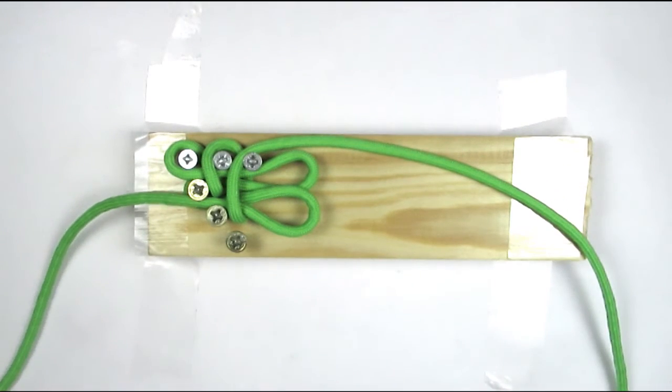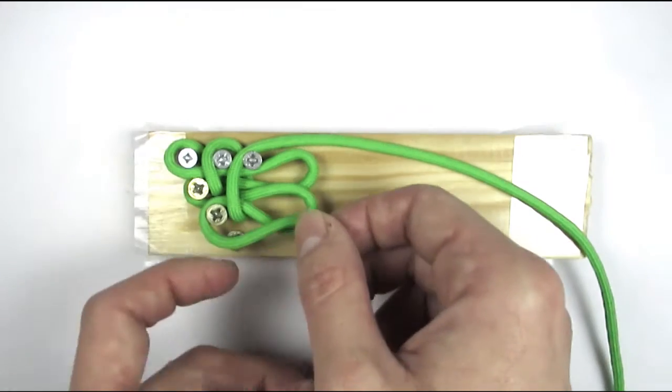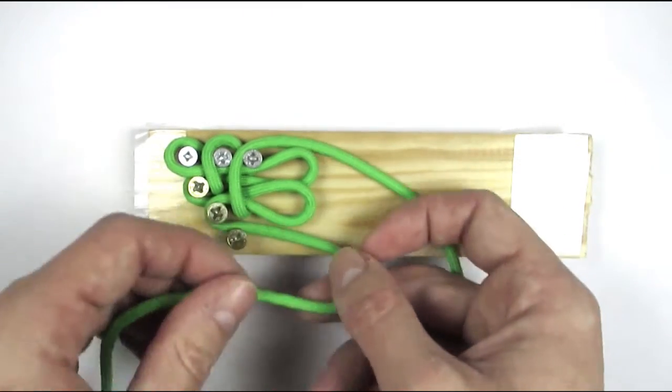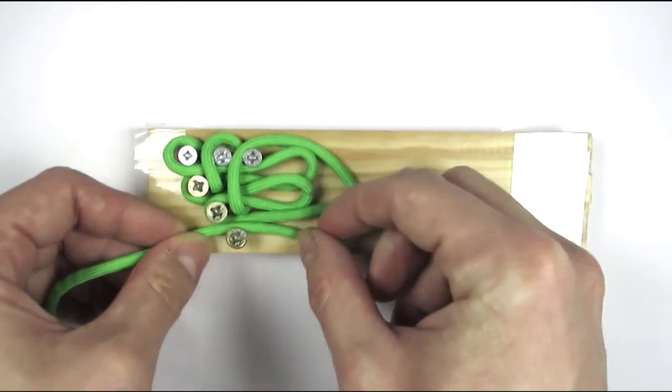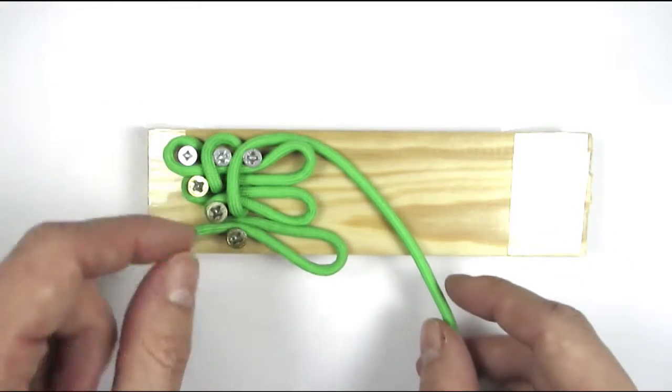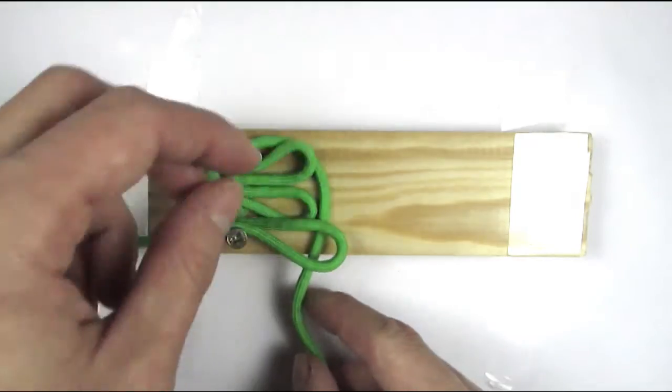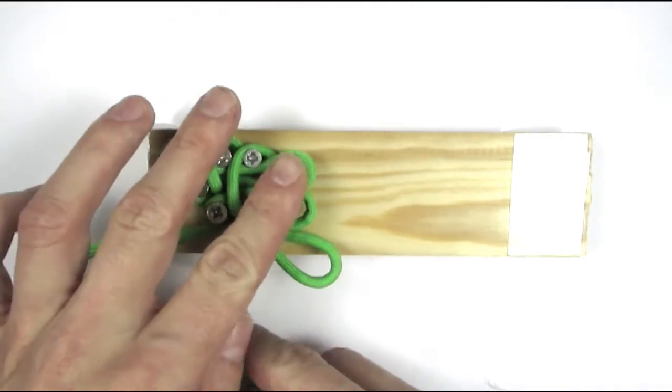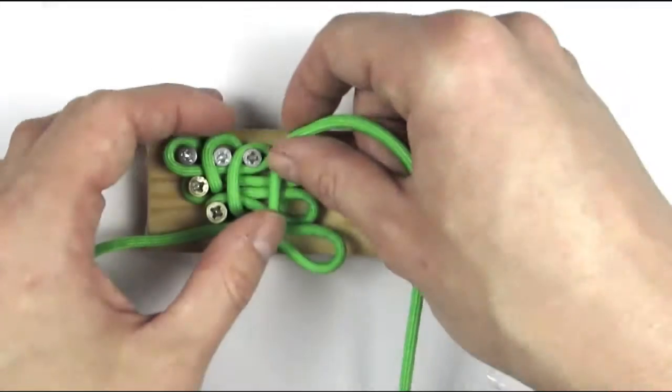We're finally going to form the third bight using our left cord, and then go under these three bights and towards the top, like this.